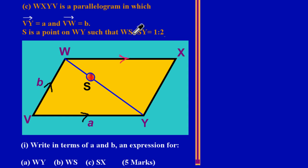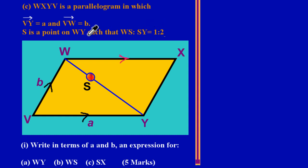S is a point on WY such that the ratio of WS to SY is equal to one to two, meaning WS is one part and SY is two parts of the diagonal WY.